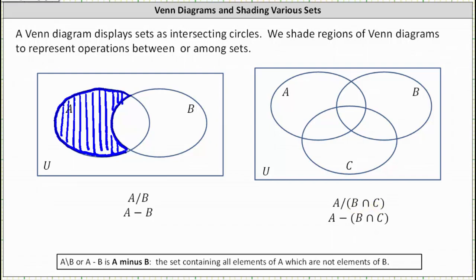Let's first shade B intersect C, which is the region that represents the set of elements that are in B and C, which would be this yellow region here.